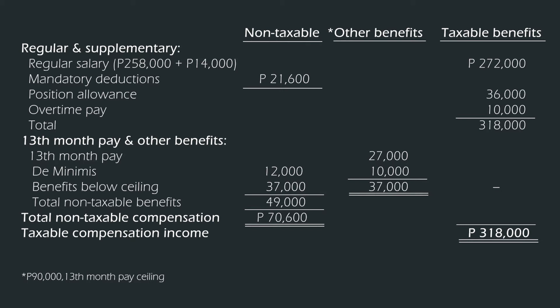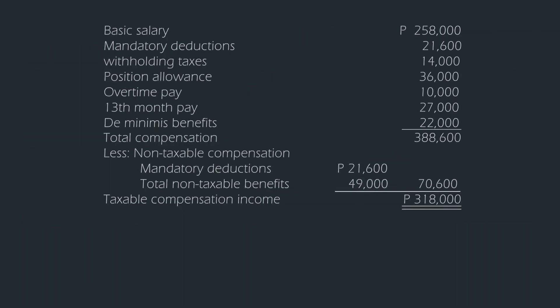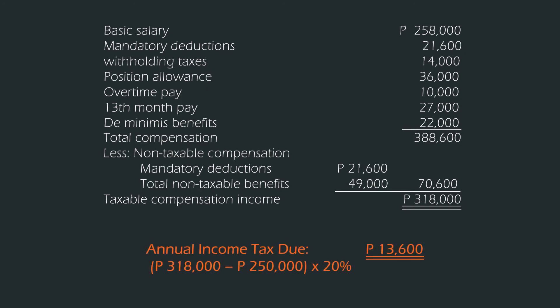Therefore, our total non-taxable compensation is 70,600 pesos, while the taxable compensation income is 318,000 pesos. Using the second bracket of the graduated income tax table under TRAIN Law, the tax due is computed as 318,000 minus 250,000, giving an excess of 68,000 pesos. Multiplied by 20%, the annual income tax due of the employee is 13,600 pesos.